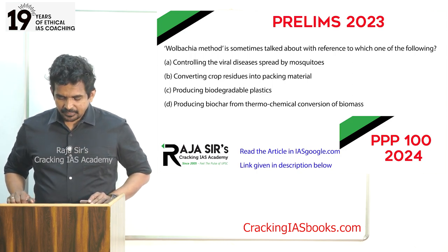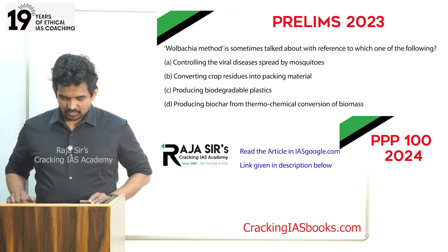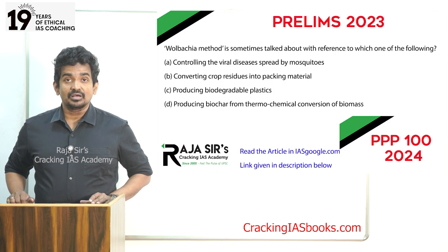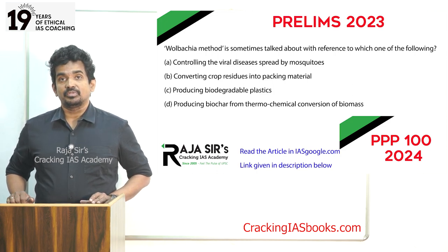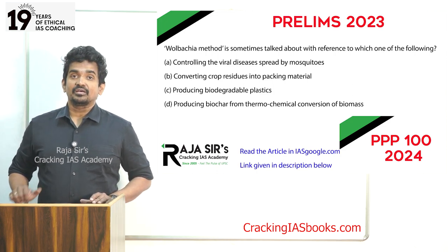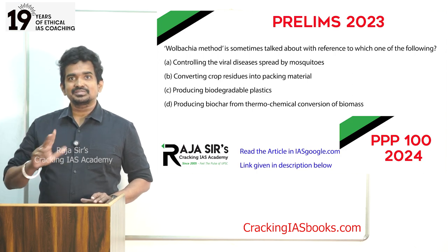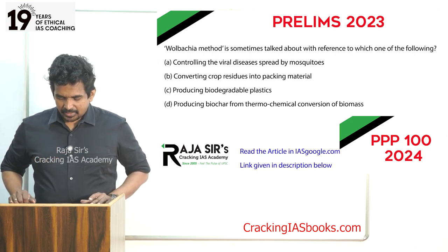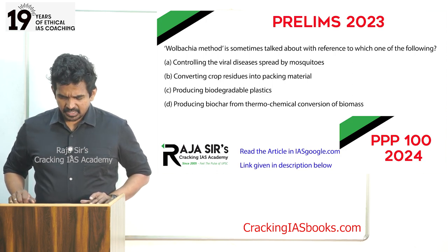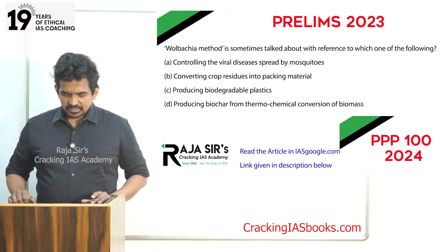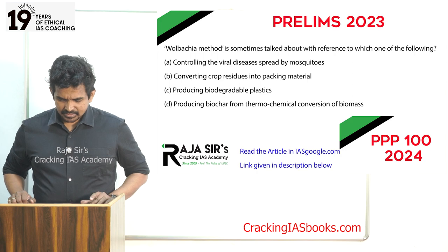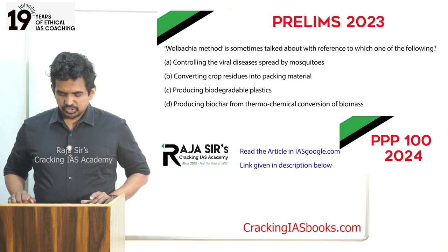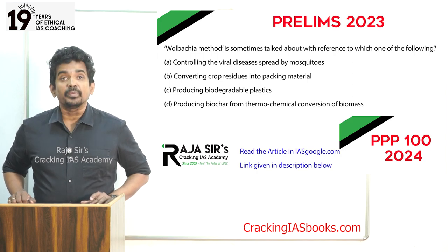The third question is the most recent one from last year: 'Wolbachia method is sometimes talked about with reference to which one of the following?' This was also a question asked in our test batch in two different versions. Option A: Controlling the viral diseases spread by mosquitoes. Option B: Converting crop residues into packing material. Option C: Producing biodegradable plastics. Option D: Producing biochar from thermochemical conversion of biomass.